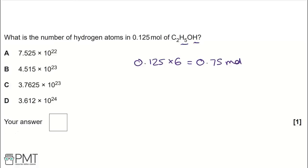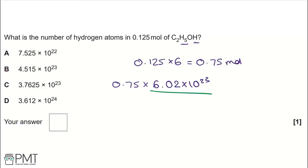To convert moles into number of hydrogen atoms, we multiply 0.75 by Avogadro's constant, 6.02 × 10²³. That gives us 4.515 × 10²³ atoms of hydrogen. This matches option B, so to get the mark we need to write B in the answer box.